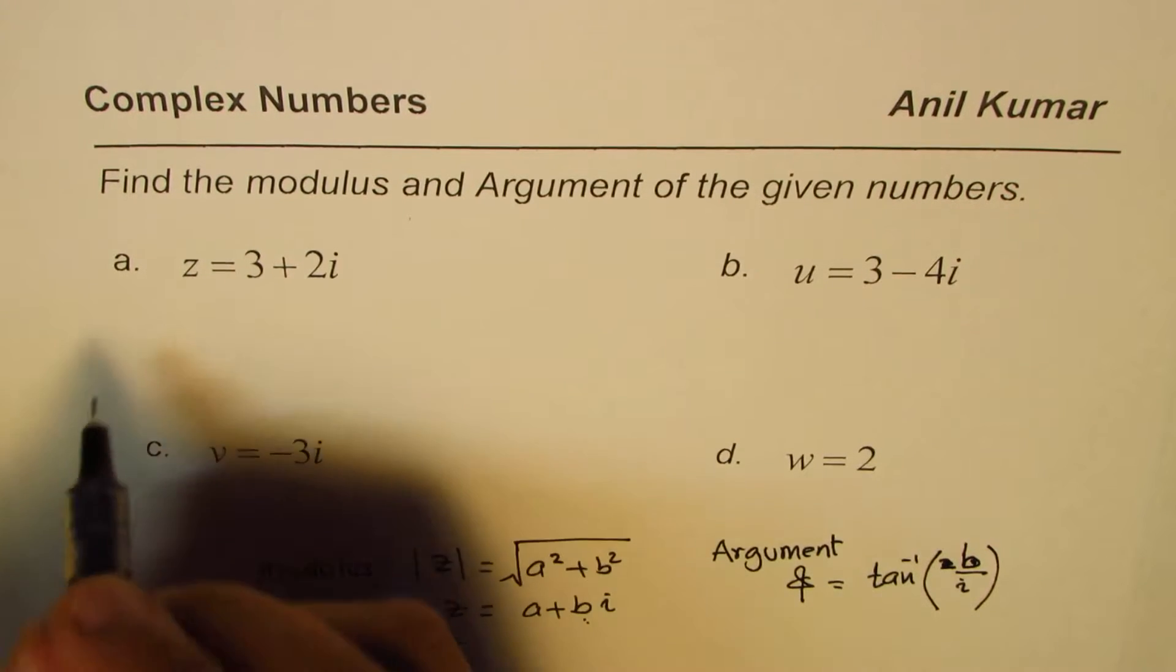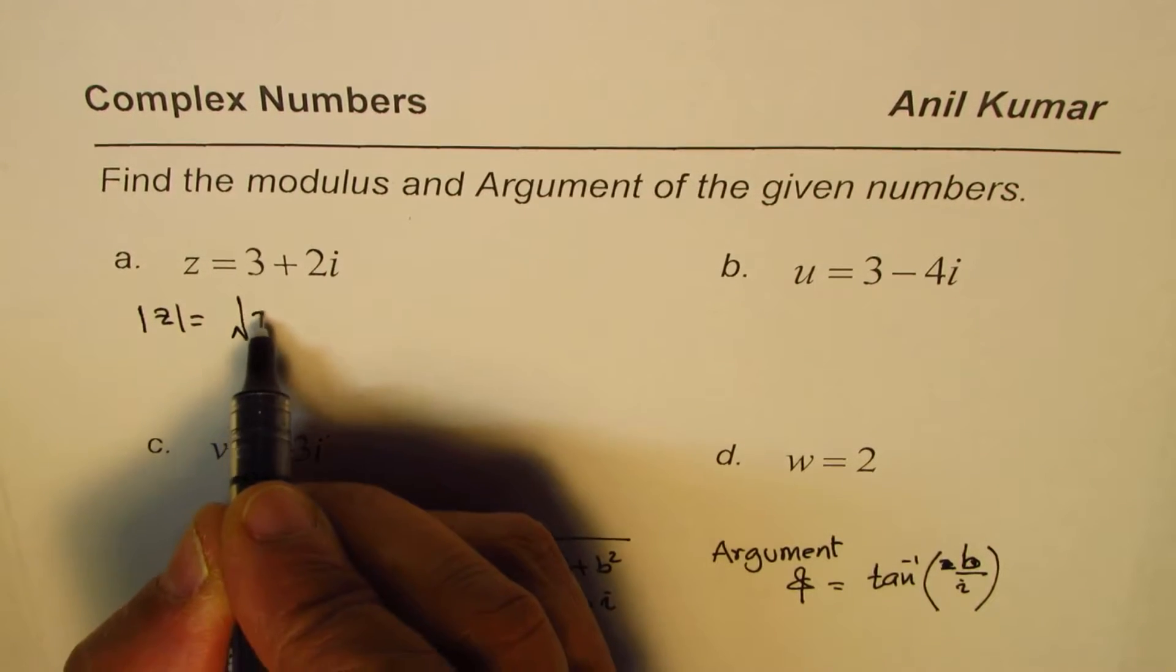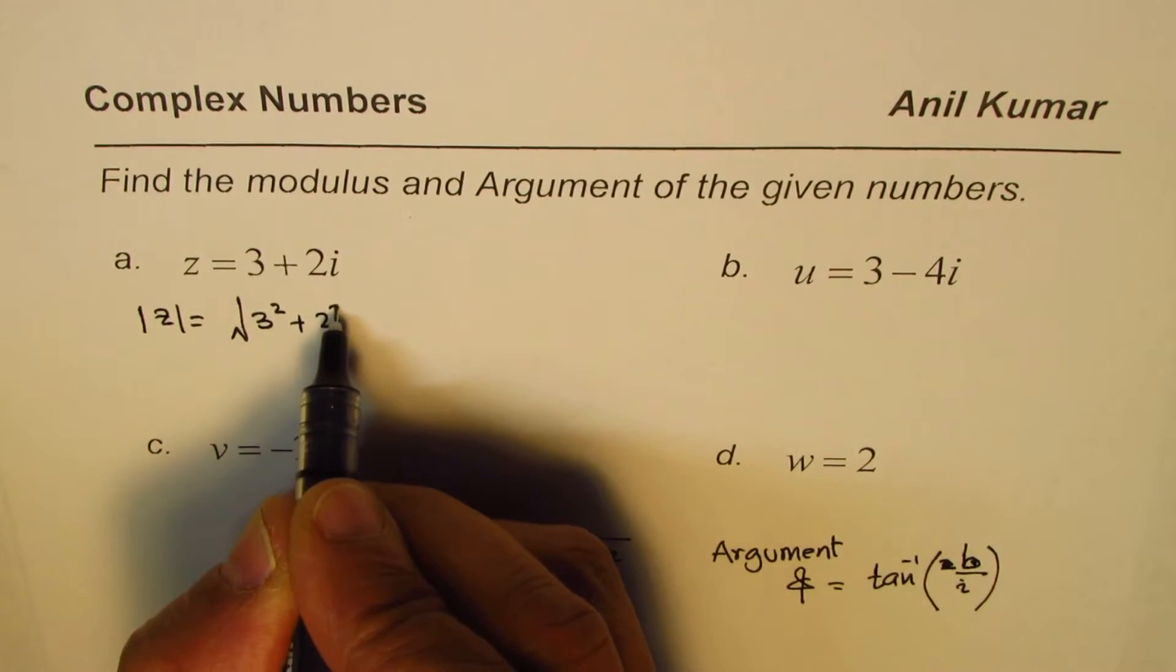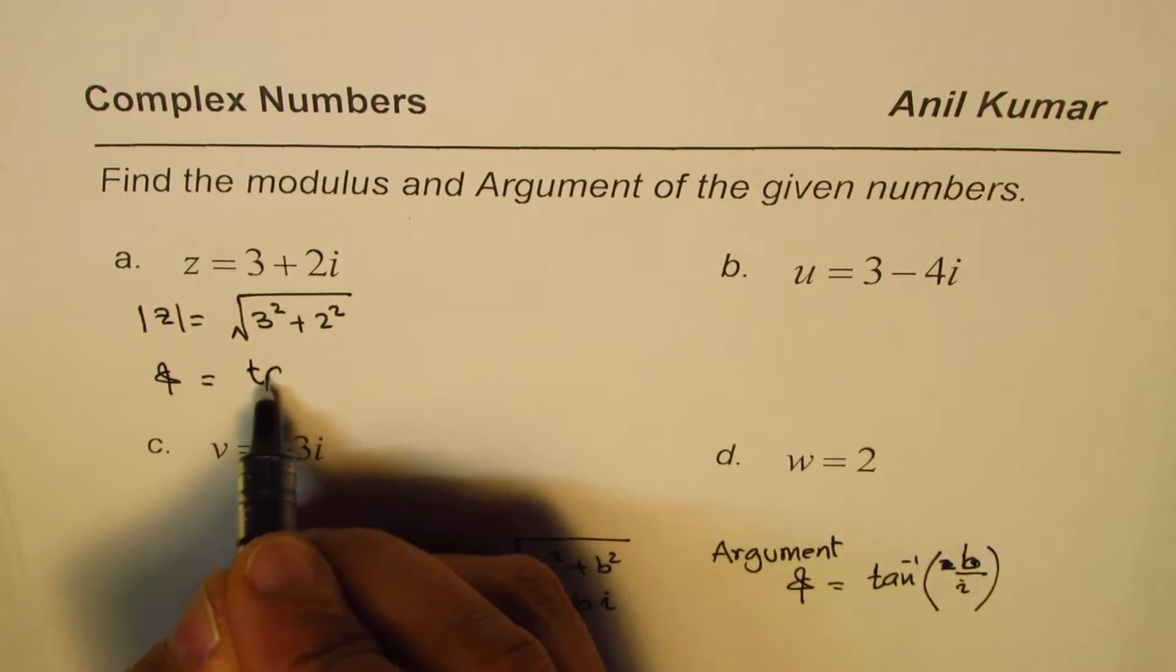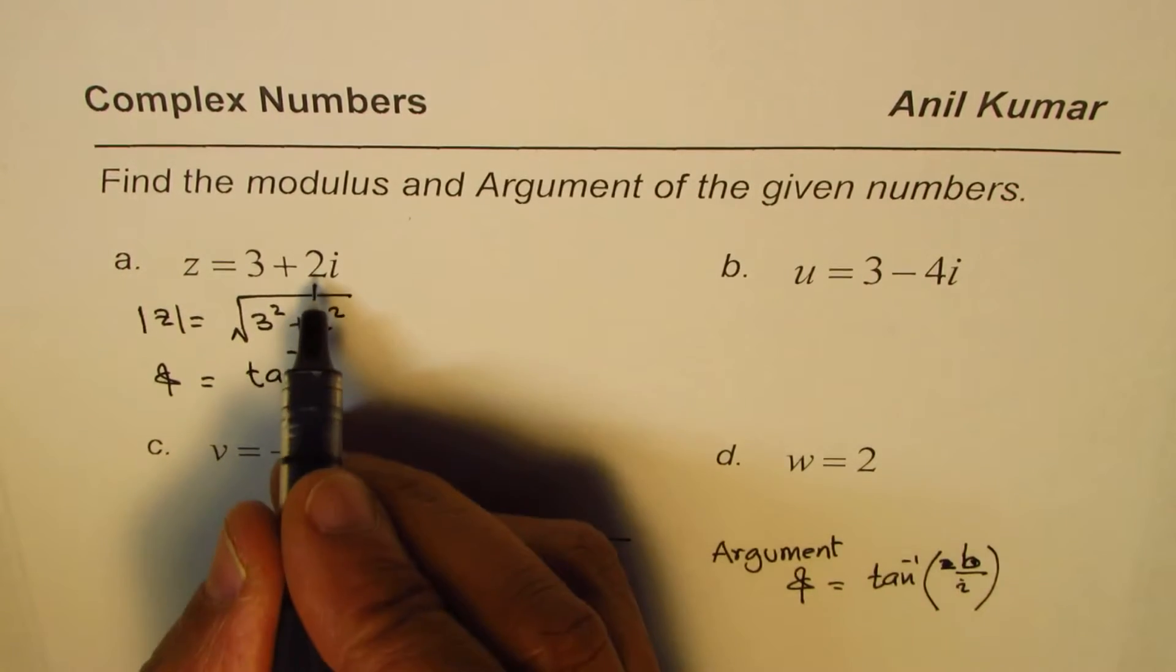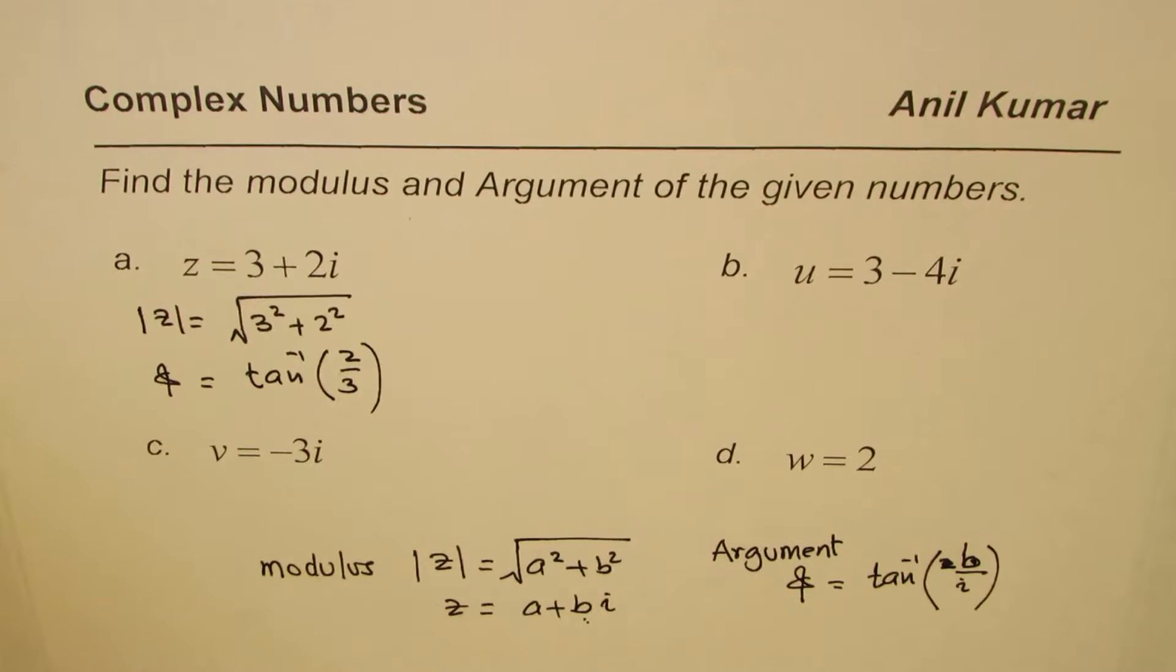So for the first one, the modulus Z will be equals to square root of 3 square plus 2 square, and the argument will be tan inverse of 2 over 3. So likewise, you can do for all, find your answers, that should give you a good practice on finding modulus and argument of these numbers.